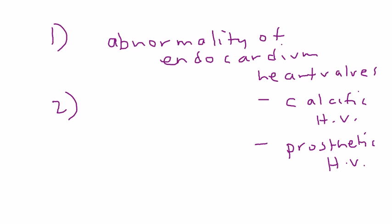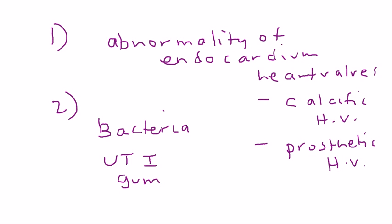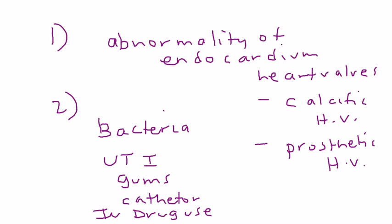The second thing you need is an introduction of some bacteria into the body. The bacteria can get into a person's body either from an infection, a urine infection, infection of the gums in your mouth, or some sort of catheter site. And very commonly in endocarditis cases, some sort of IV drug use.